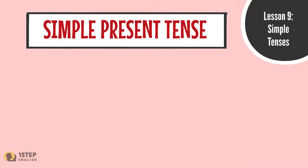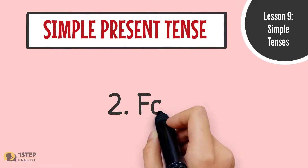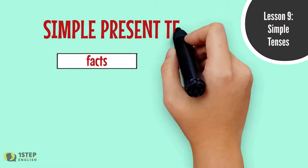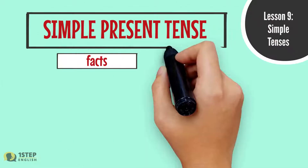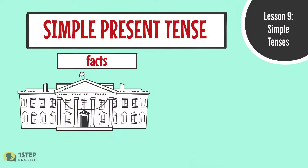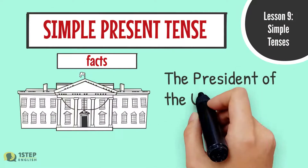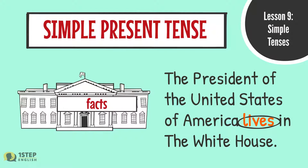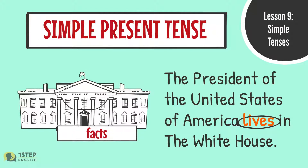We use the simple present tense for: 2. Facts. For example, 'The President of the United States of America lives in the White House.' The verb 'lives' is in the simple present tense.